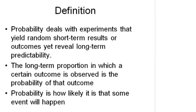In this video we are going to take a look at probability rules. Probability deals with experiments that yield random short-term results or outcomes, yet reveal long-term predictability. The long-term proportion in which a certain outcome is observed is the probability of that outcome.